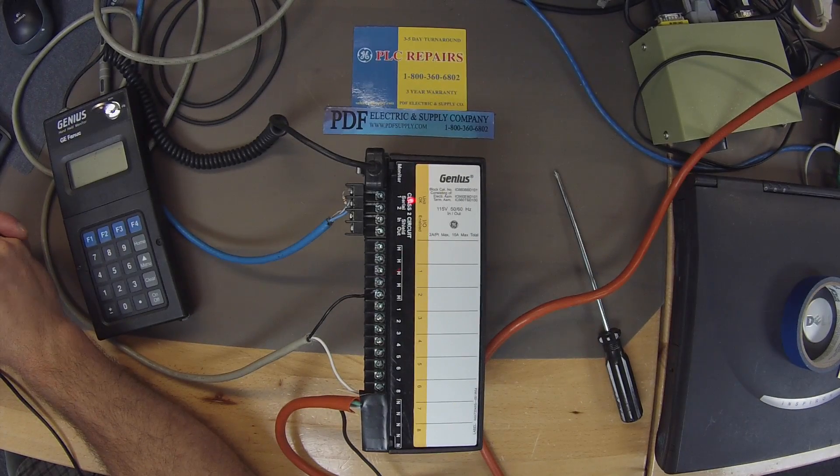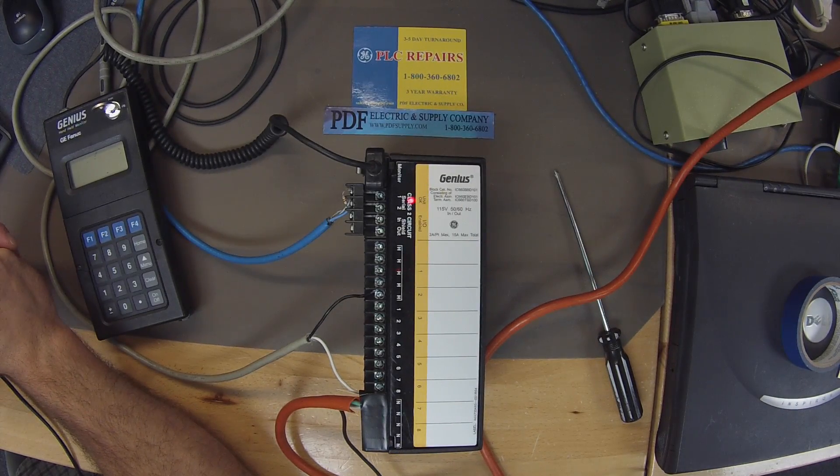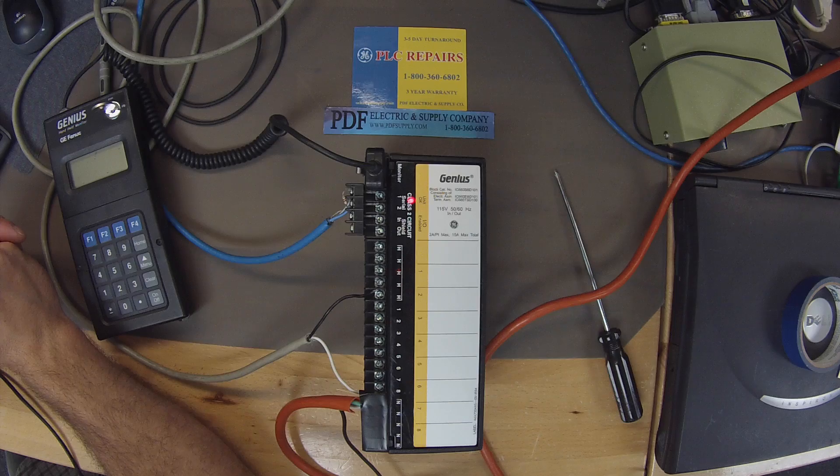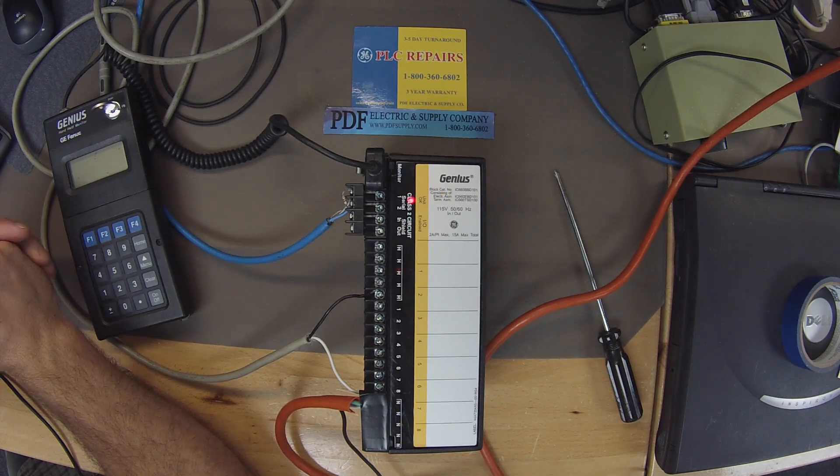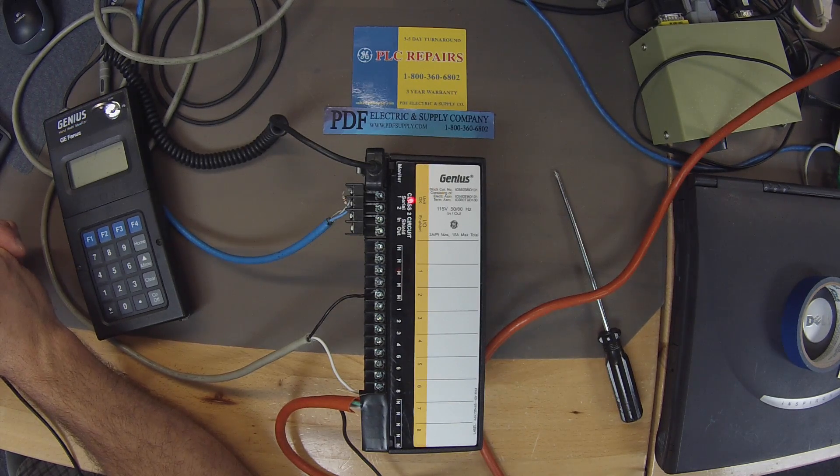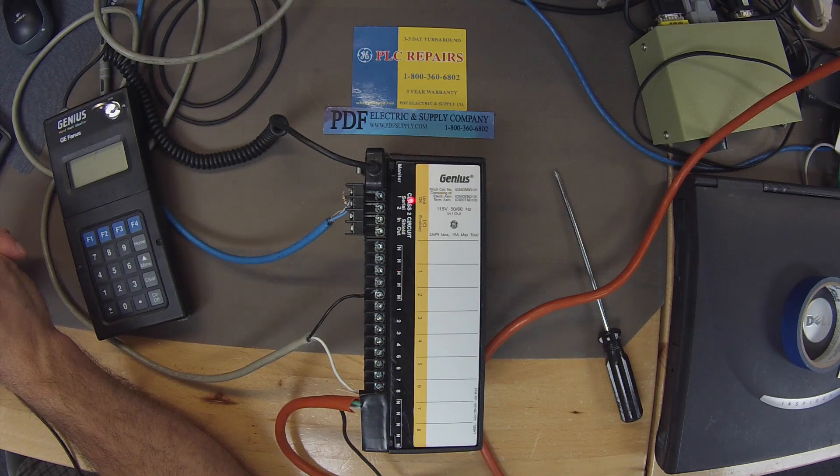Hello and welcome to PDFsupply.com. Today we're going to be testing an IC660 BBD101 Genius Block. This is a 115 volt AC, 8 point input output discrete block.